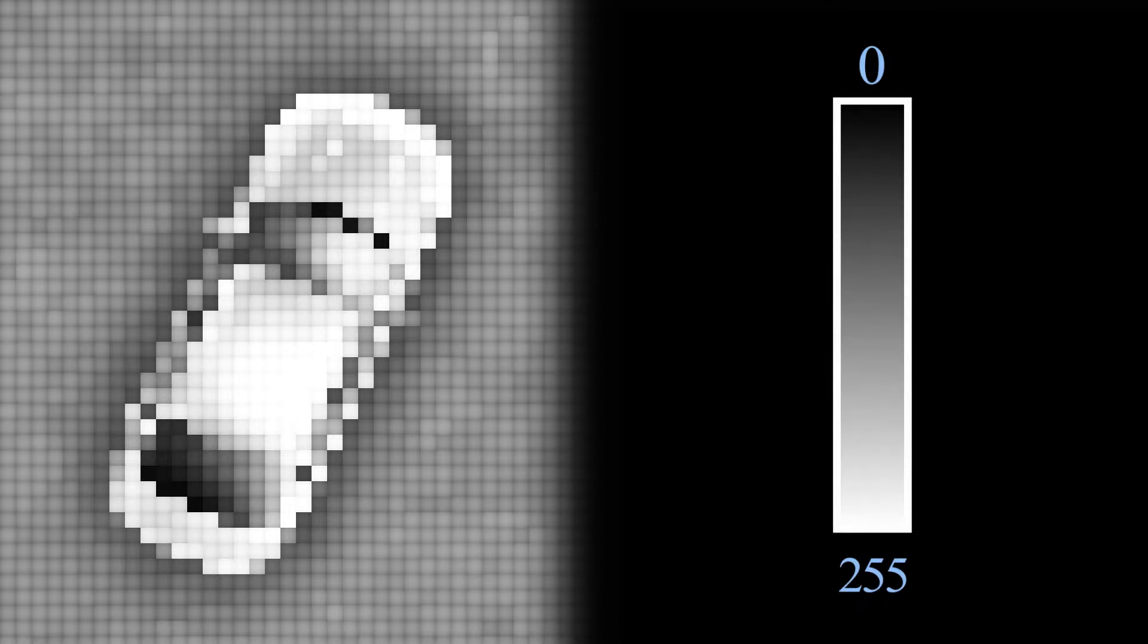To do that we're going to use a threshold method. The idea is simple: we convert our picture into a grayscale picture where values range from 0 to 255, then for each pixel we see if its value is higher than the threshold we defined, and if so we keep it.